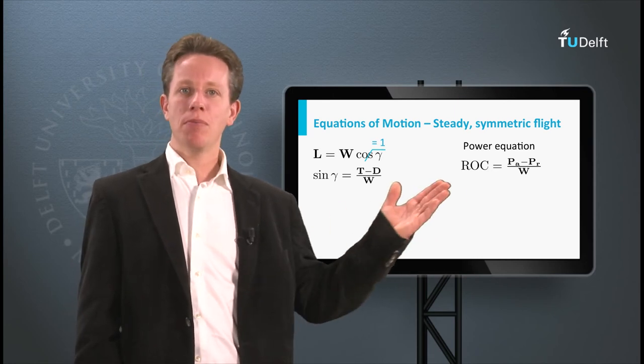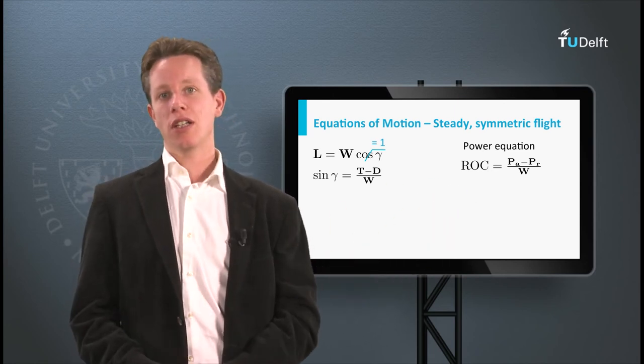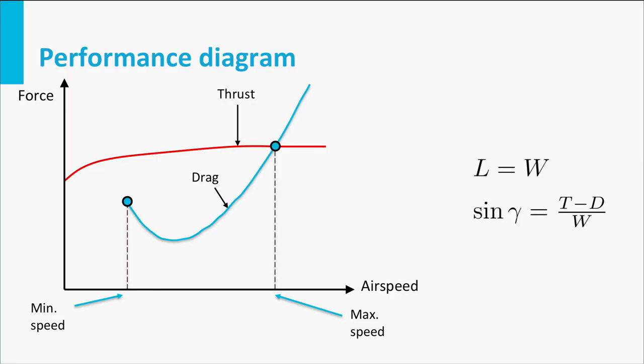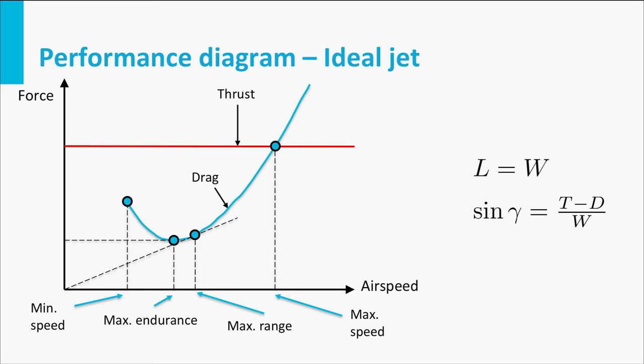So when power available and power required are known, you can actually calculate rate of climb. A very nice way of summarizing the performance is the performance diagram. In this diagram, aerodynamic drag and the propulsive force are sketched as a function of airspeed. If we assume to have an idealized jet engine with constant maximum thrust as a function of airspeed, we can derive that the condition for maximum climb angle occurs at the airspeed for minimum drag. At the same time, this point is also optimum for minimum descent angle in case there is no engine power.